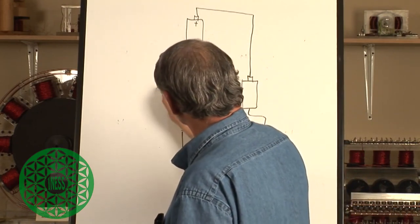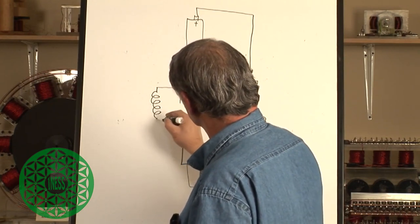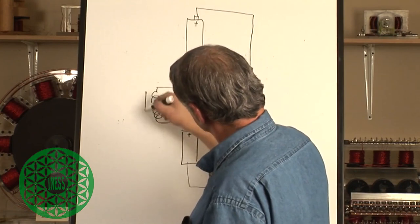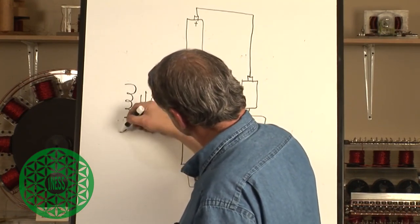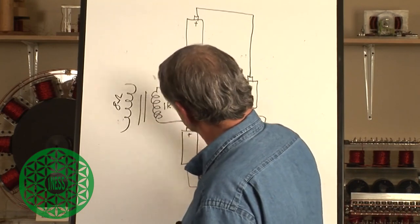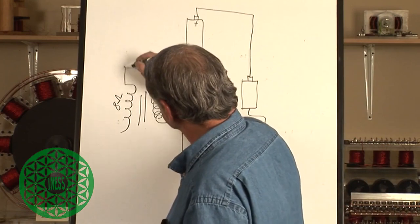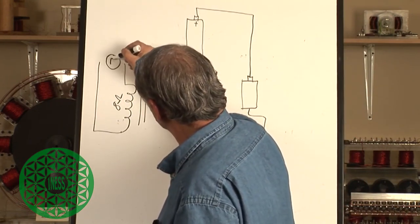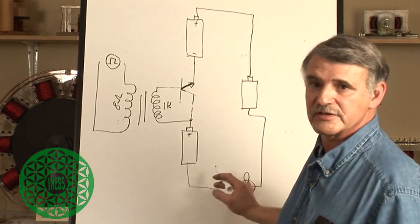So, what we did was we took an audio transformer. The 1K side. And the 8 ohms side went on this side. So, that when we took this and put our pulse into this, it turned this device on and this light flashed.